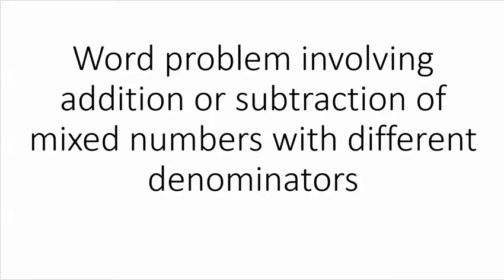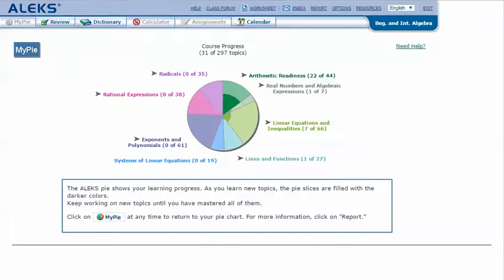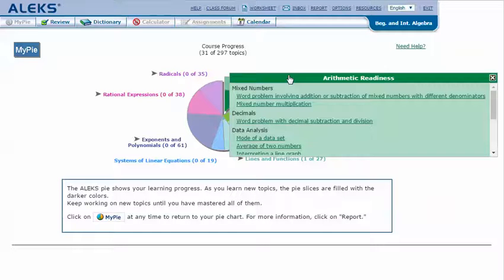Word Problem Involving Addition or Subtraction of Mixed Numbers with Different Denominators. In your AlexPie, mouse over the green slice arithmetic readiness to reveal the drop-down list of topics you need to cover, then click on Word Problem Involving Addition or Subtraction of Mixed Numbers with Different Denominators.